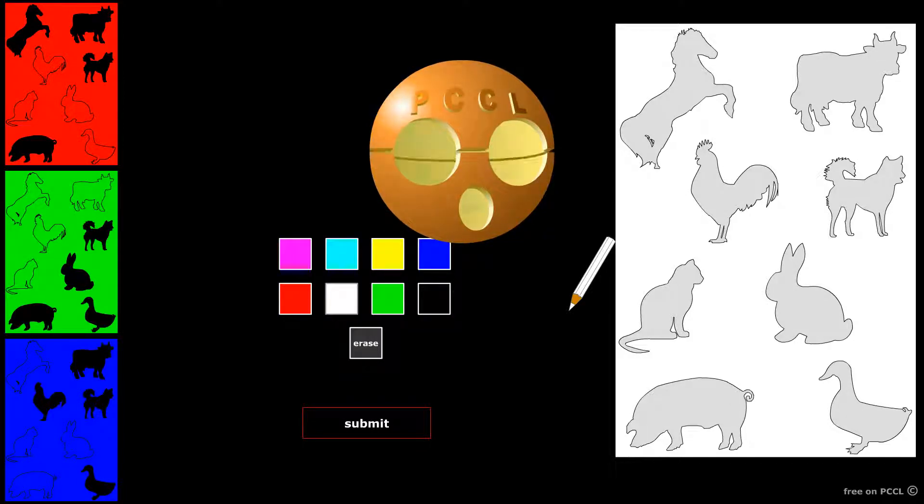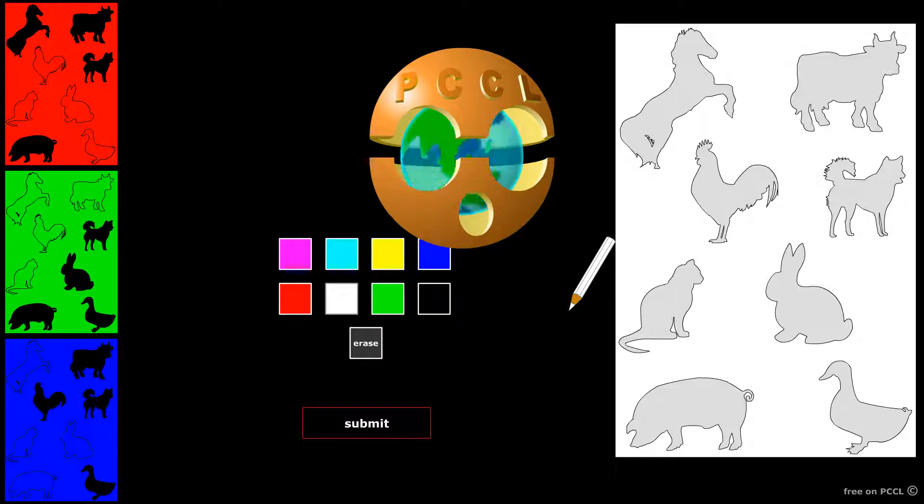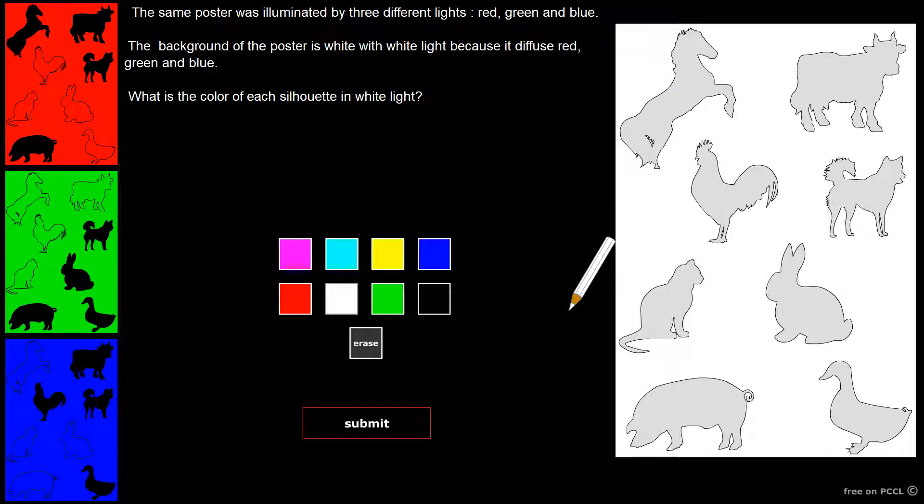Hello, PCCL channel greets you. A poster was illuminated by three different lights. Here, by the red only. There, only by green. And only by blue.